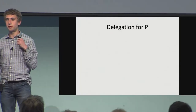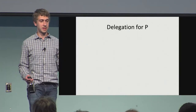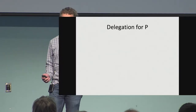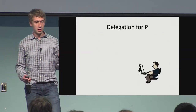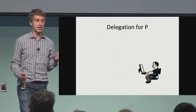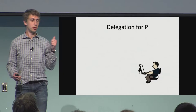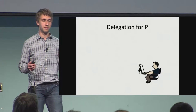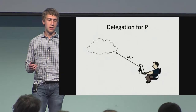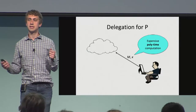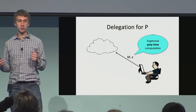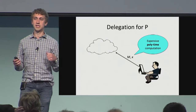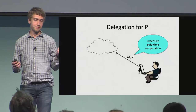To motivate this notion of non-uniformly sound certificates, I want to start with the problem of computational delegation. This is the setting where we have some programmer, Bob, who wants to compute some function, but this function is a kind of expensive polynomial time computation, so he wants to outsource it to the cloud.